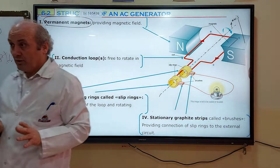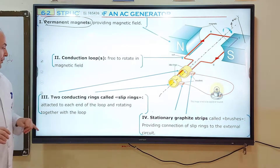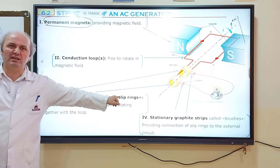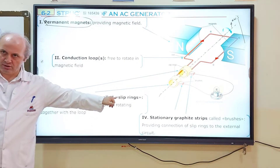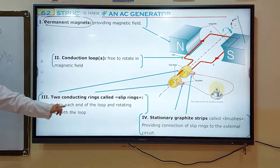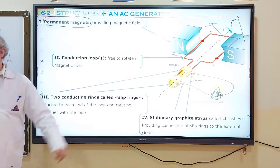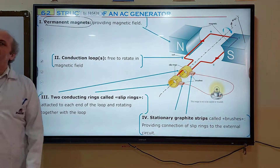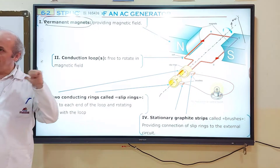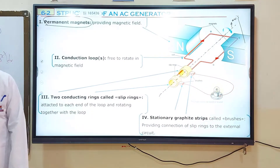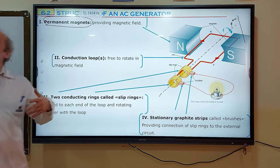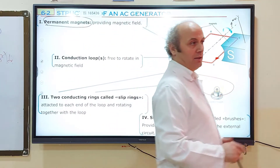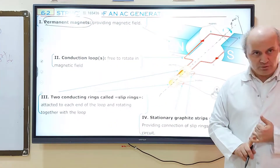The third component consists of two conducting rings called slip rings. These rings are attached to each end of the loop. Because the loop has two ends, one end of the loop will be attached to one ring, and the other end will be attached to the other ring. This ring rotates together with the coil or the loop.